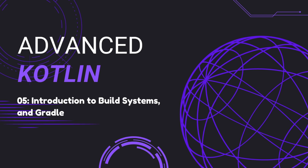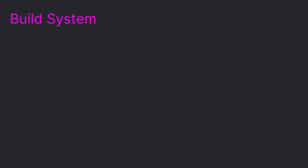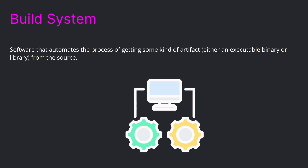Welcome back. In today's episode we will look at an introduction to build systems and Gradle. A build system is a software that automates the process of getting some kind of artifact — this can either be an executable binary or a library — from the source code.